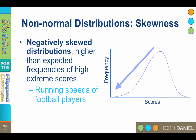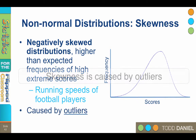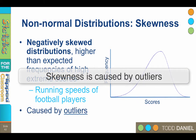For example, if we were interested in the running speeds of football players, we might find a lot of very fast players — high scores — but only a few slower runners, low scores. Skewness is always caused by outliers in the direction of the tail.